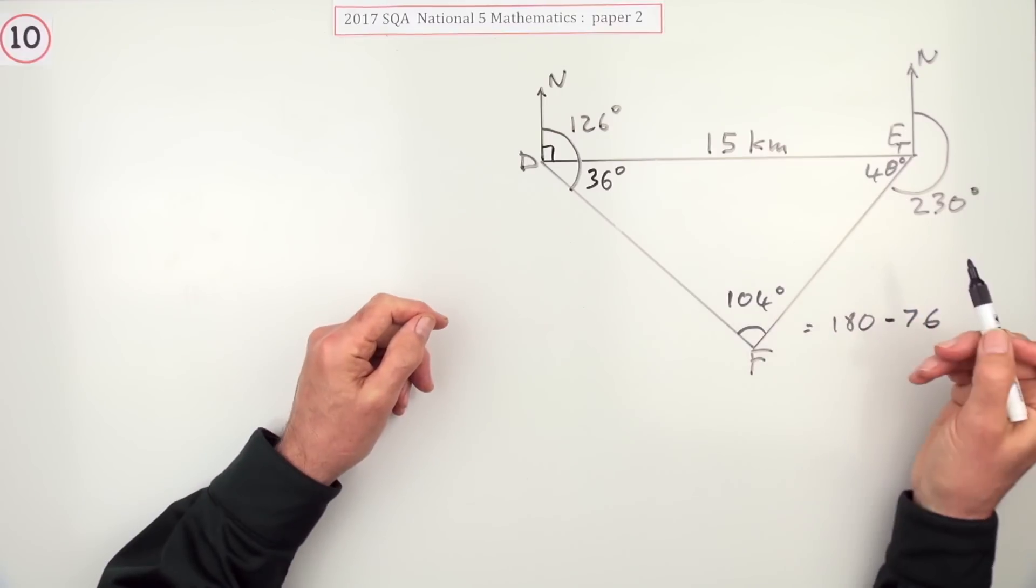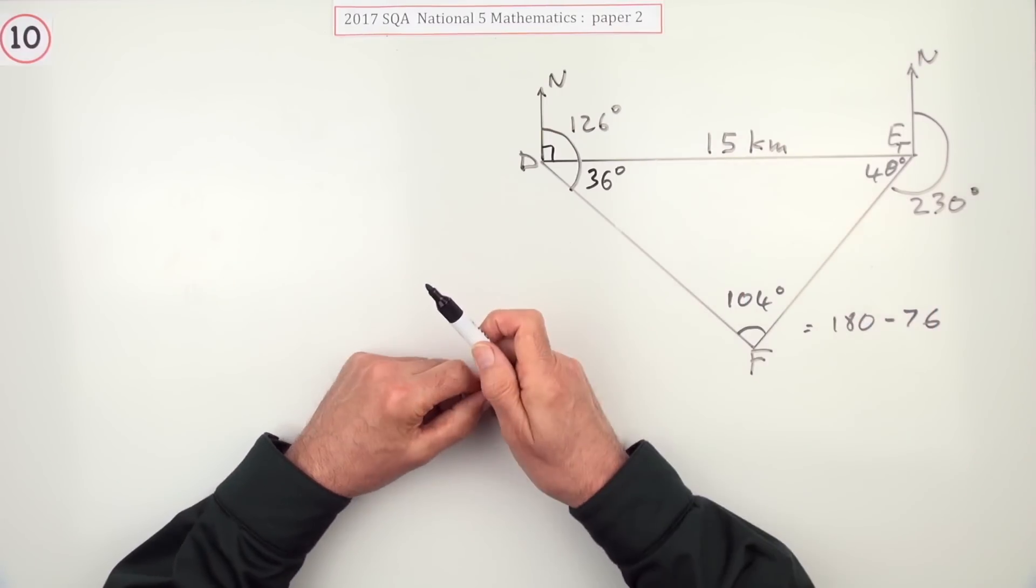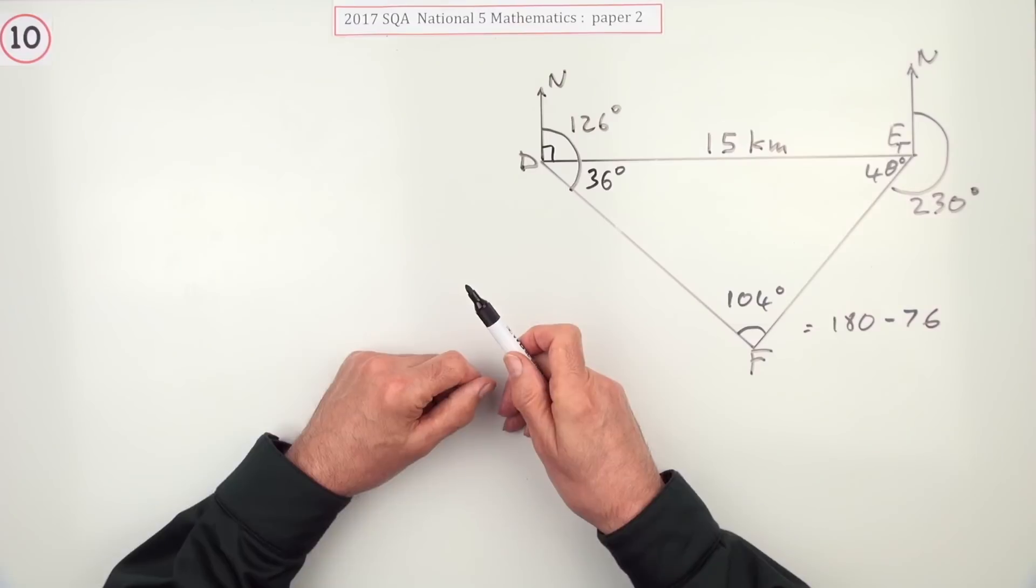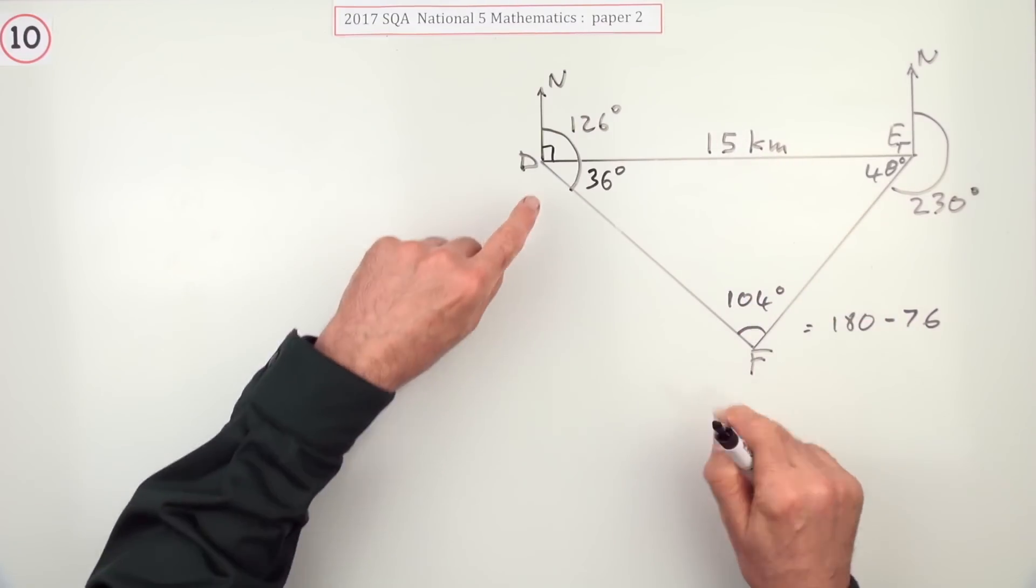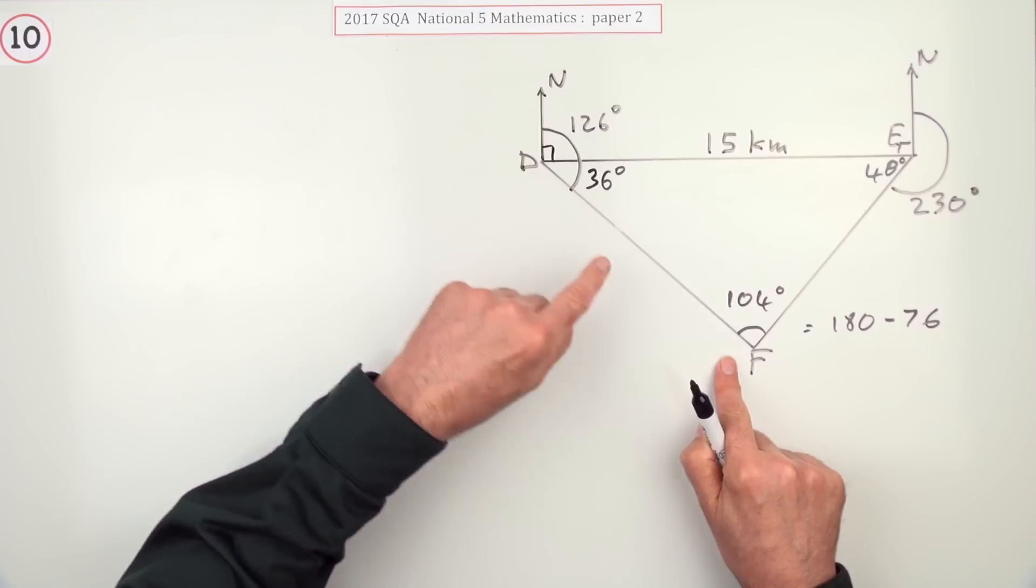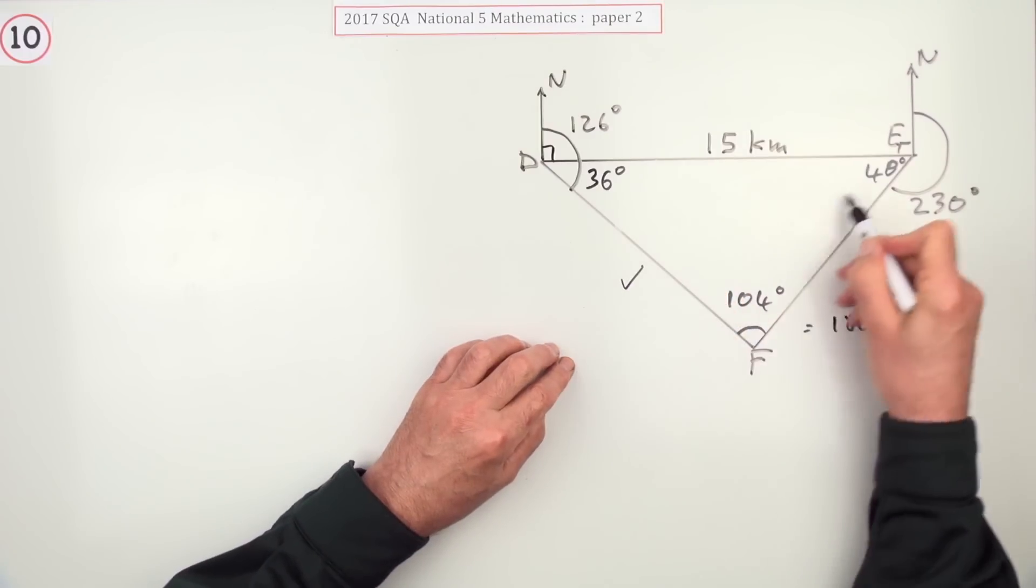Now you look at the configuration you've got. You've only got one side. It's the sine rule. An opposite pair. 15 goes with 104. And the thing you want, DF, this side here, goes with the 40.